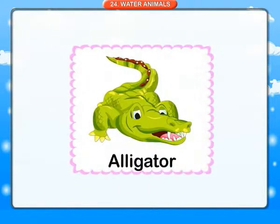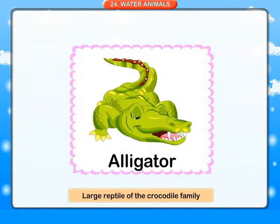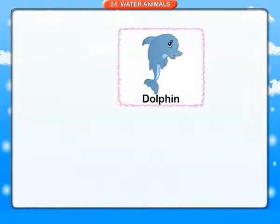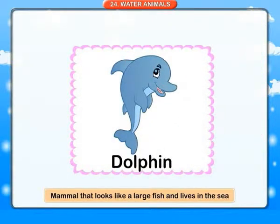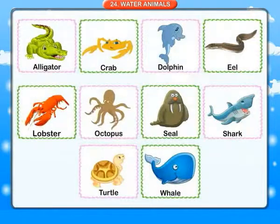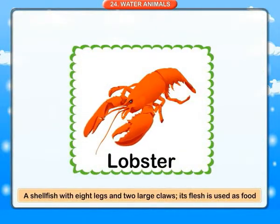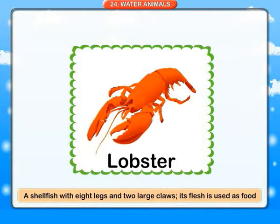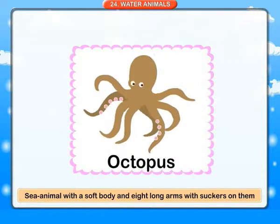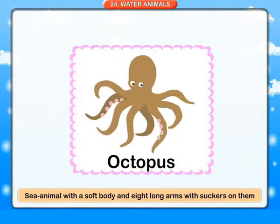Water animals. Alligator: a large reptile of the crocodile family. Crab: a ten-legged shellfish. Dolphin: a mammal that looks like a large fish and lives in the sea. Eel: a long snake-like fish that is difficult to catch hold of. Lobster: a shellfish with eight legs and two large claws; its flesh is used as food. Octopus: a sea animal with a soft body and eight long arms with suckers on them.